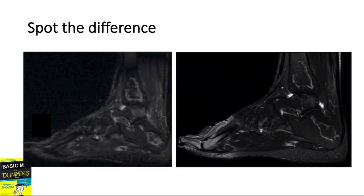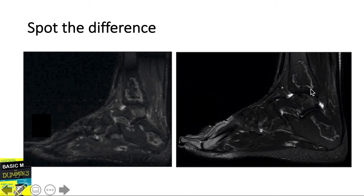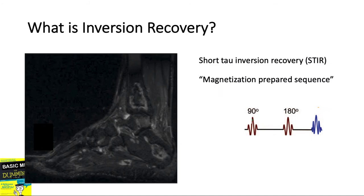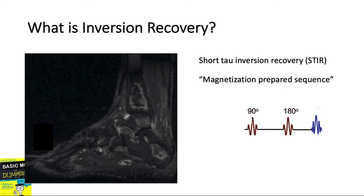These two images are both taken to highlight water or edema. Can you tell the difference, and what can you say about the signal of the subcutaneous fat and the marrow infarcts in both cases? We are familiar with STIR, or Short Tau Inversion Recovery — an image that nulls fat and highlights edema. This is a variation of the spin echo sequence and is what we call a magnetization-prepared sequence.